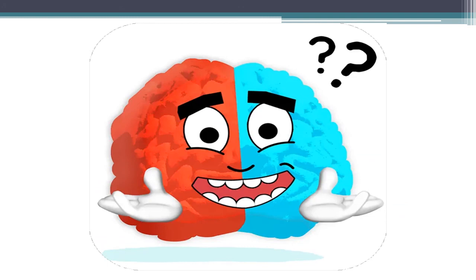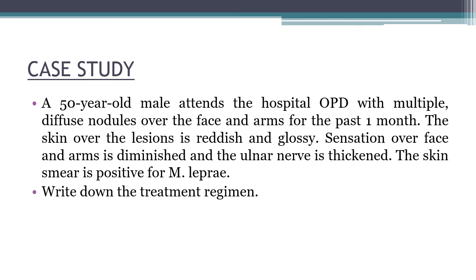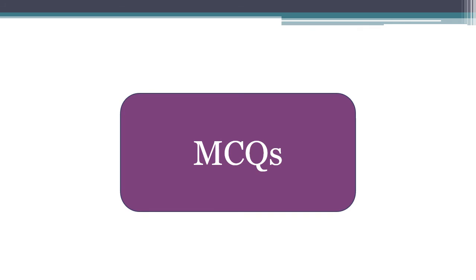Now for the quiz. Write down the question numbers and answers and submit them in your WhatsApp group for attendance. Case: A 50-year-old male presents with multiple diffuse nodules over the face and arms for the past one month; skin is reddish and glossy; sensation over face and arms is diminished; ulnar nerve is thickened; skin smear is positive for Mycobacterium leprae. Write down the treatment regimen for both paucibacillary and multibacillary leprosy.